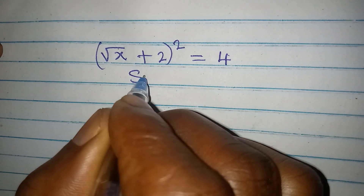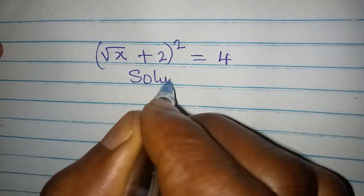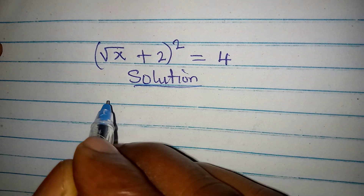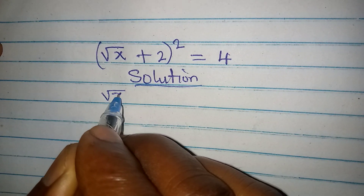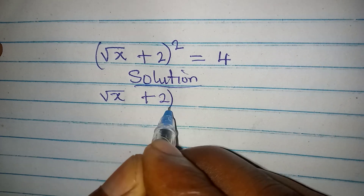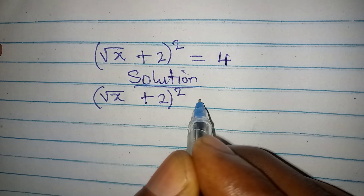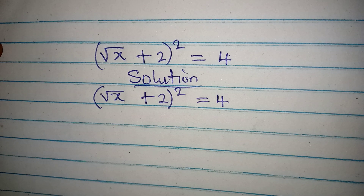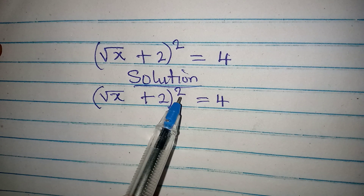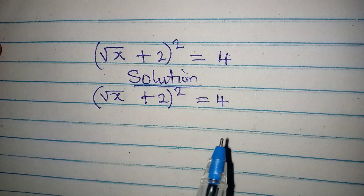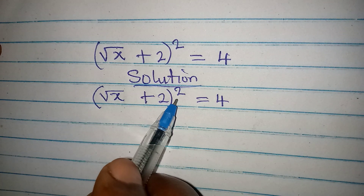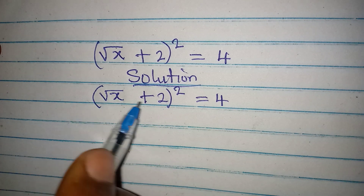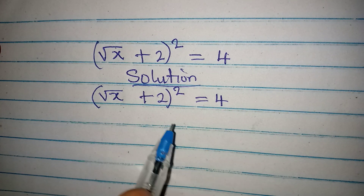Hello everyone. Let us provide the solution to this problem. We have square root of x plus 2 to the power of 2 equal to 4. Now the first step is to remove the square from here — or you can expand what we have — but removing the square root is going to be faster.